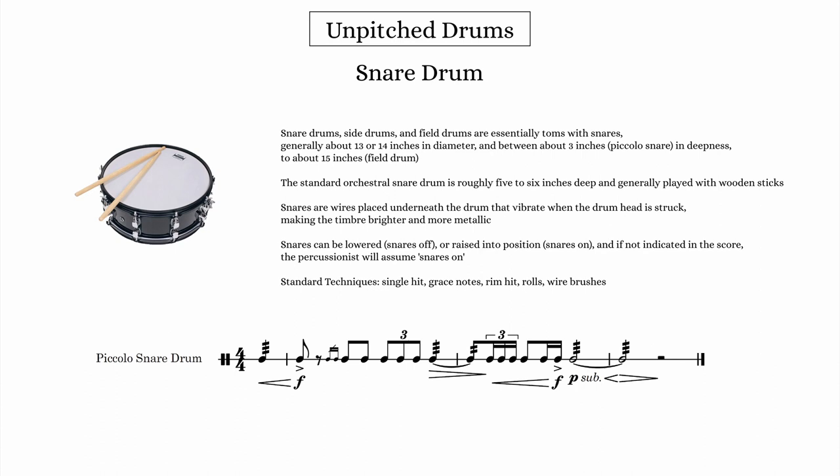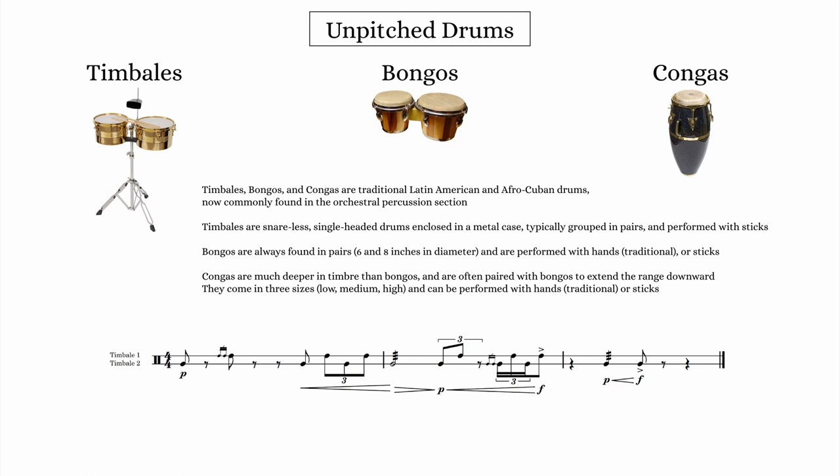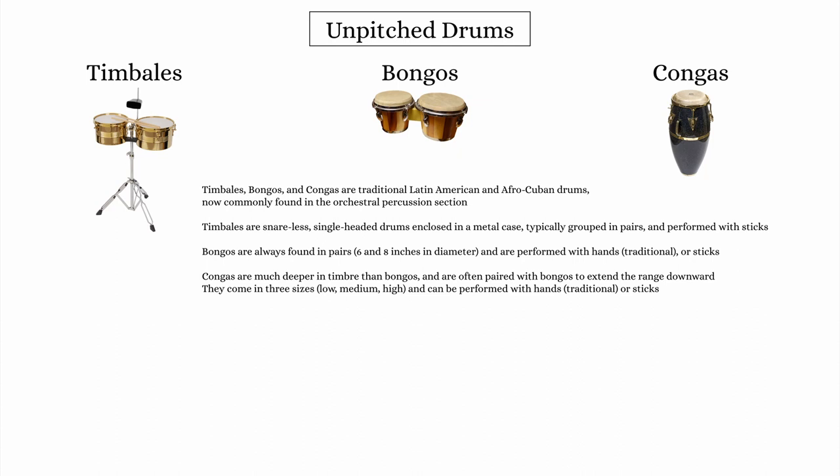Moving on, I want to cover one more group of unpitched drums — timbales, bongos, and congas. These are traditional Latin American and Afro-Cuban drums that became regular members of the symphony orchestra during the 20th century. Timbales are snareless, single-headed toms tuned fairly high in pitch and played with sticks, commonly found in a low and high drum pairing. Bongos are traditionally played with the hands, though modern orchestral bongo parts often use sticks for a more piercing timbre. If writing for bongos using hands, you might want to explore the traditional Latin rhythms, sounds, and notations.